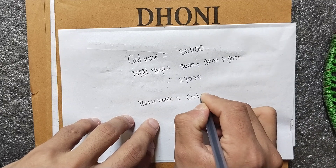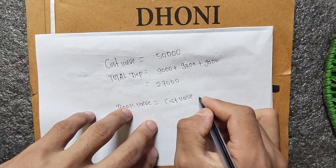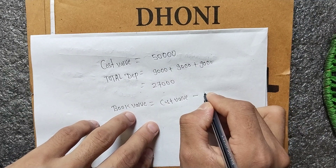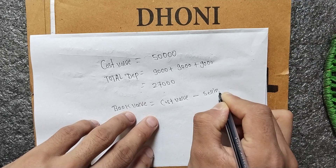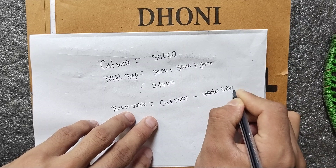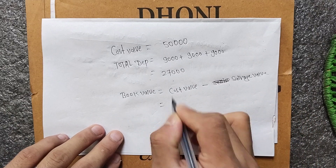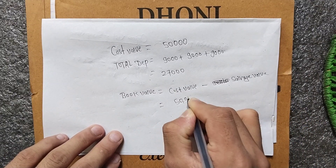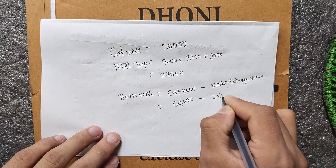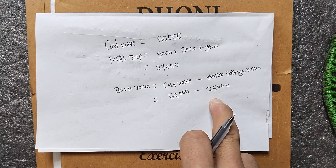The cost value is 50,000. We subtract the salvage value and accumulated depreciation. Total cost is 50,000 minus accumulated depreciation of 27,000, leaving a book value of 23,000.